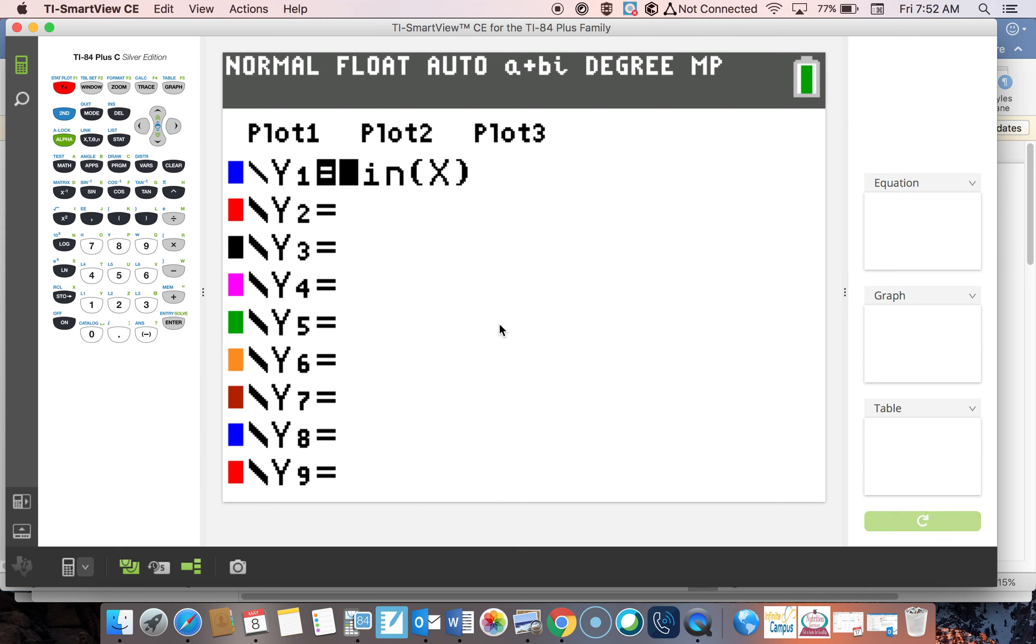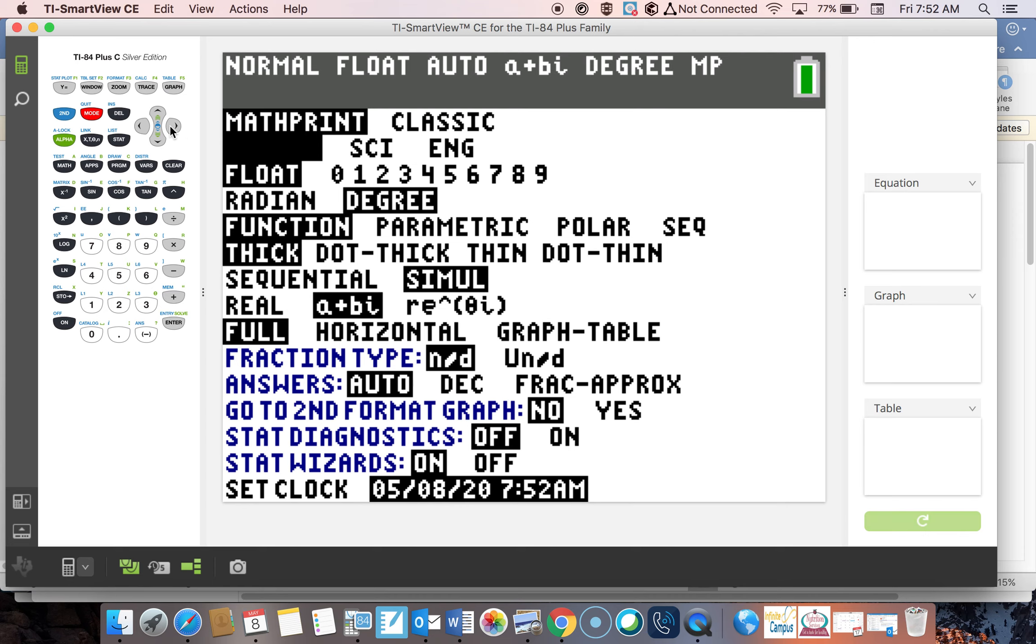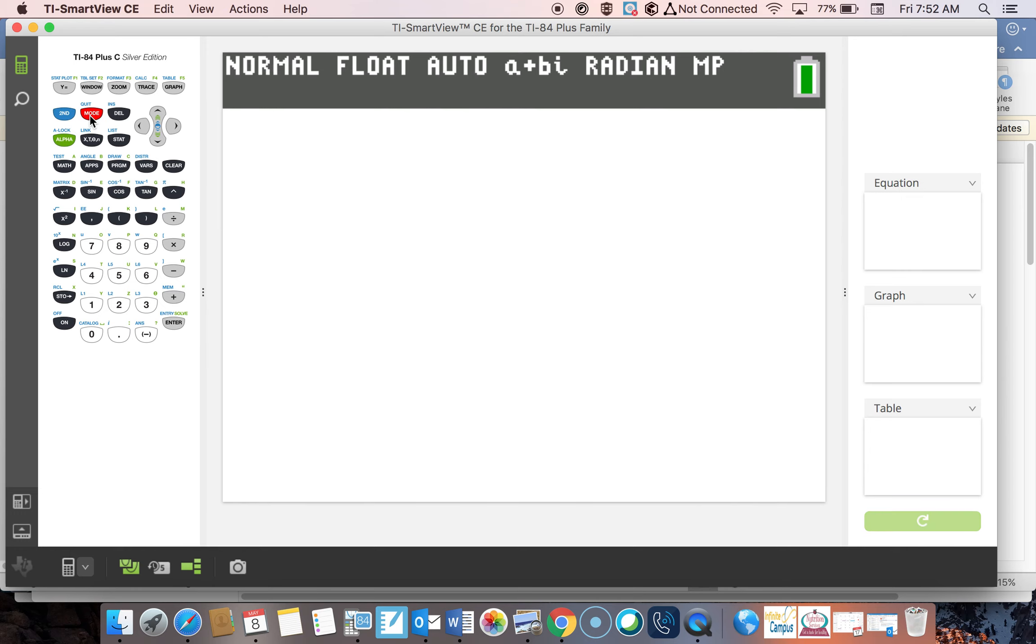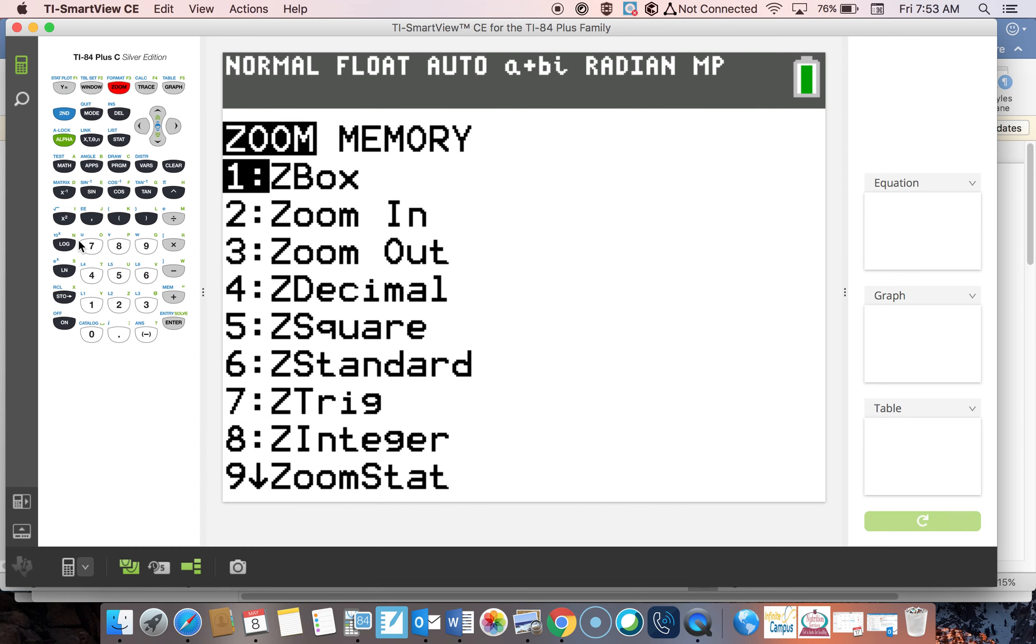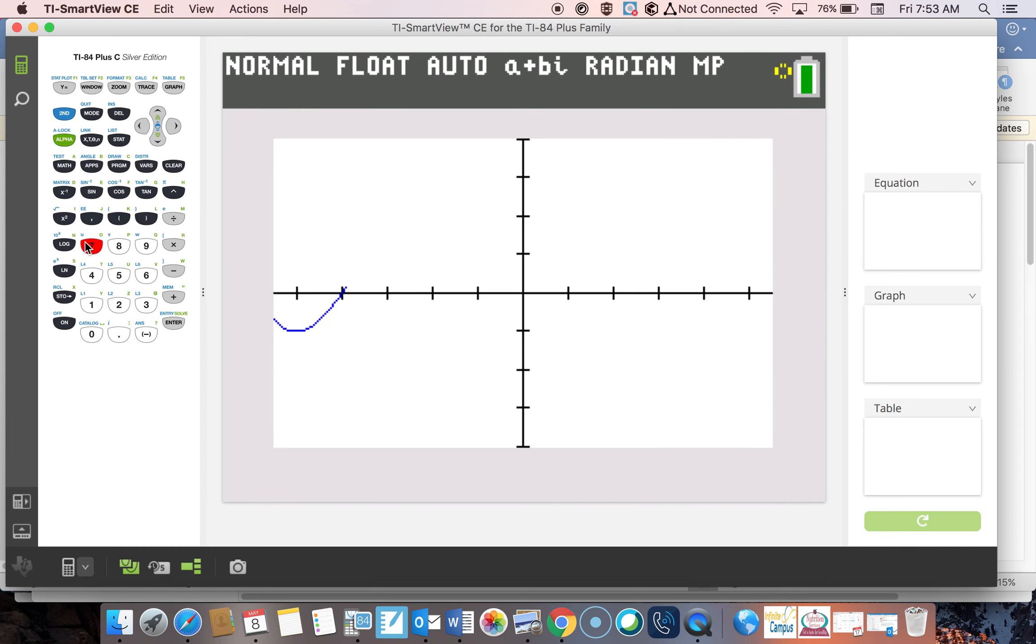So let's go back to y equals, and then I am going to have you change the mode to radians. Go to radians, hit enter, and then you go second quit. And we are doing y equals, sin x, zoom, and I am going to go to trig again. You need to redo that as we are going with the radians.